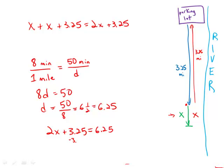Subtract 3.25 from both sides, and what we get is 2x equals 3. So, x equals 1.5. The distance he can run additionally is 1.5, and this is answer choice A.